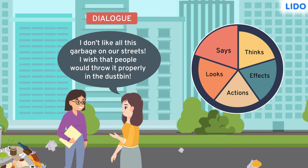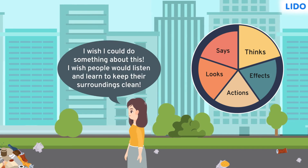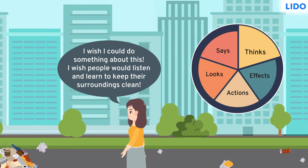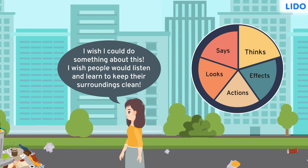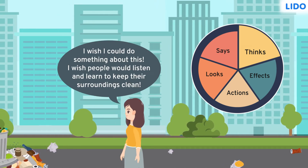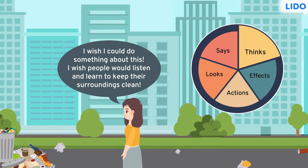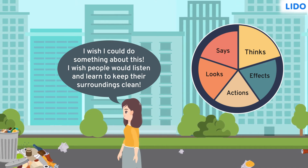This is called dialogue — it is what the character says to someone else. We learn more about the character from this. Now, Shazia walks home thinking about the lack of cleanliness on the streets. From her thoughts, we get to know that she wants to do something about this problem. Both a character's dialogues and thoughts tell us a lot about them.